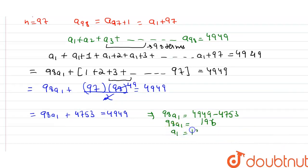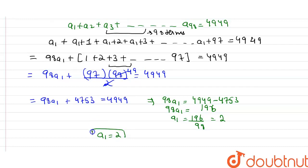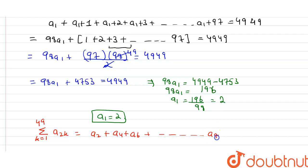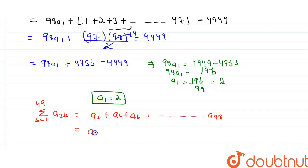From 98·a1 = 196, we get a1 = 196/98 = 2. Now for the required summation, expanding Σ(k=1 to 49) a(2k) gives a2 + a4 + a6 + ... + a98. We know a2 = a1+1, a4 = a1+3, a6 = a1+5, ..., a98 = a1+97.